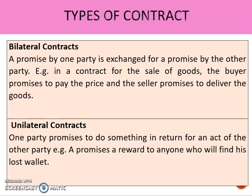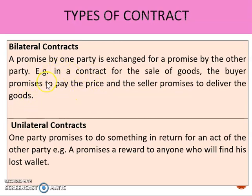Before we look at a definition of an offer, it's important that you understand the key types of contract we're going to encounter. You need to be aware of the difference between bilateral and unilateral contracts. In a unilateral contract, the clue is in the name — uni meaning one, so it's one-sided. The promisor makes an open promise to provide something in exchange for performance. A classic example would be a promise to reward anybody who finds a lost wallet. In a bilateral contract, both the promisor and the promisee knowingly enter into an agreement where both parties make a promise and each is obligated to fulfil it. So in a contract for the sale of goods, the buyer promises to pay the price and the seller promises to deliver the goods — that's two-way.